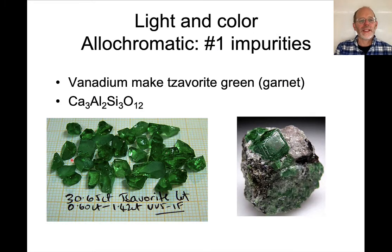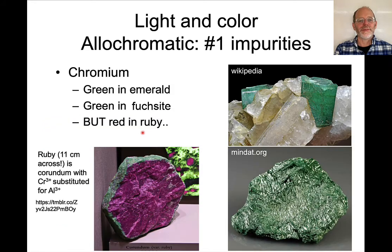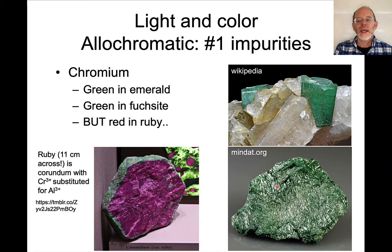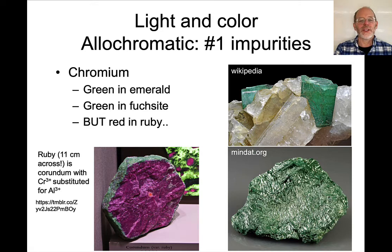A small amount of vanadium will make tsavorite garnet green. Nominally its composition is grossular, but that tiny bit of vanadium causes the green color. Chromium causes colors in many different minerals: a small amount of chromium in beryl creates the gem emerald, and it also creates the green color in fuchsite, a chromium-bearing muscovite. But in ruby, which is corundum, it causes a red color — the structures are different, so the interactions with light are different.